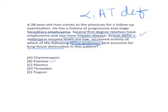Now, why does hepatic disease occur in alpha-1 antitrypsin deficiency? The mutation in the gene coding for alpha-1 antitrypsin causes synthesis of a mutated alpha-1 antitrypsin protein. Since alpha-1 antitrypsin is normally secreted out of the hepatocyte, the mutated protein is instead retained within the endoplasmic reticulum. This causes the ER to become engorged, leading to hepatic cirrhosis and its consequences.